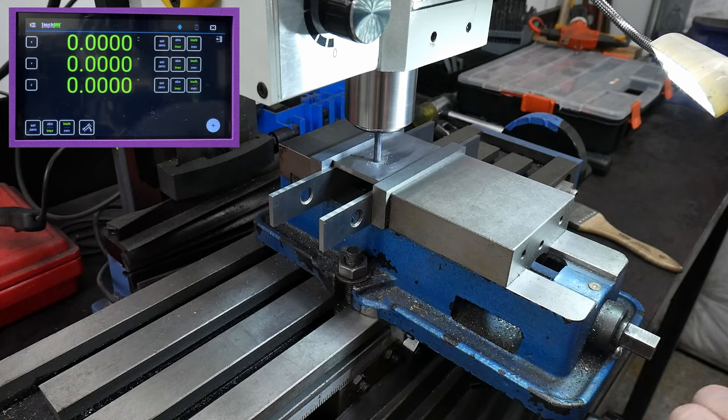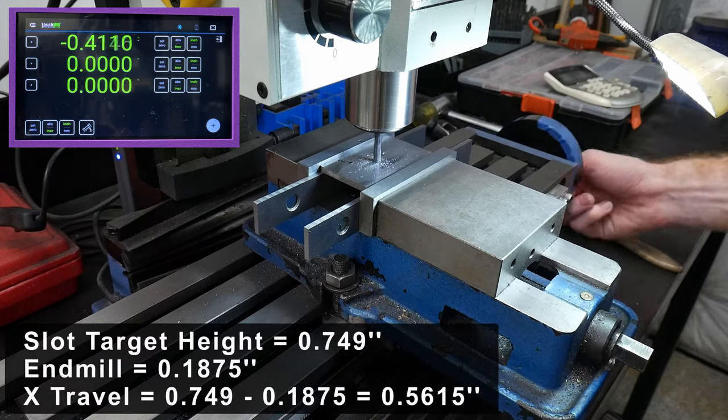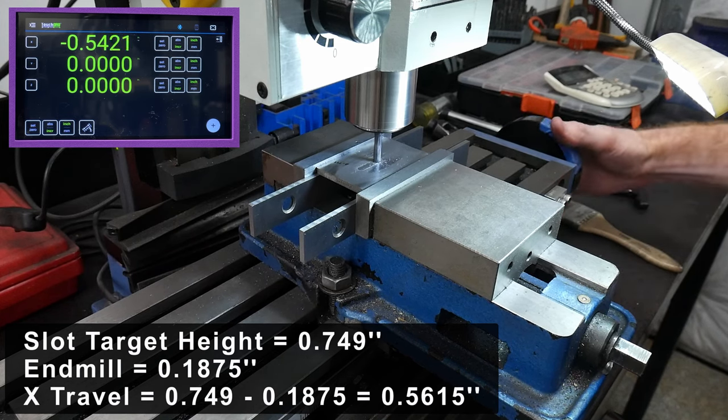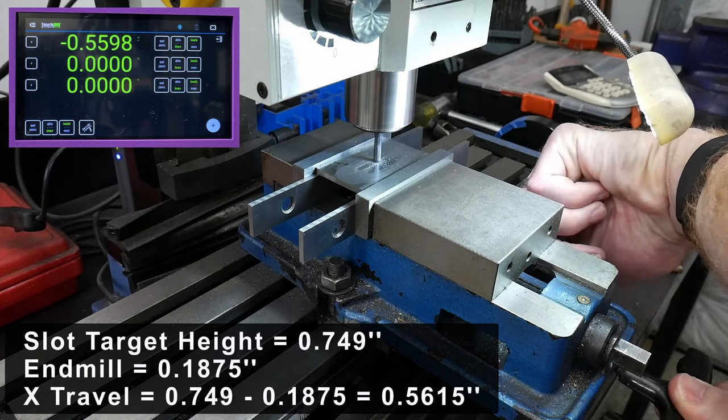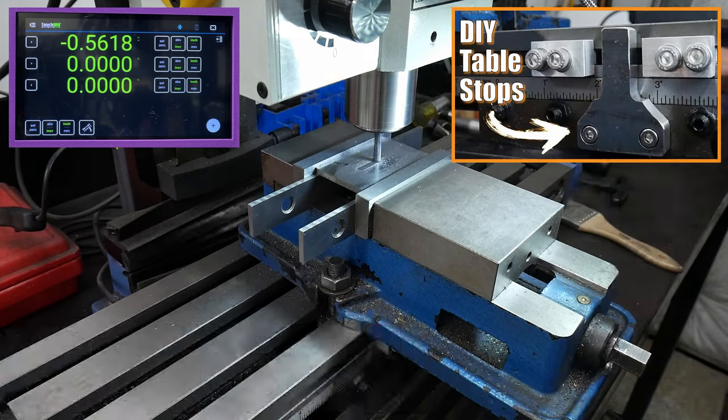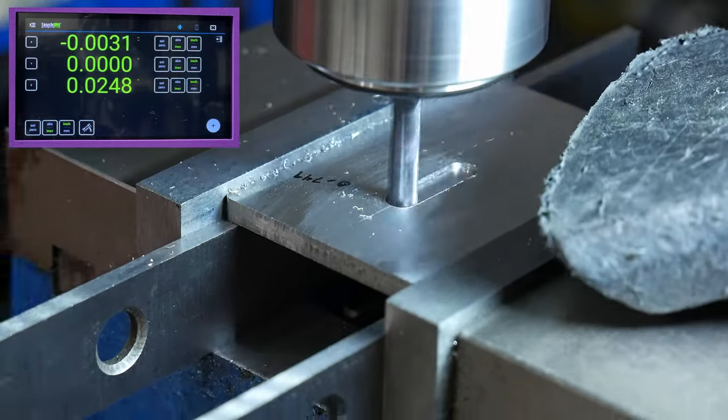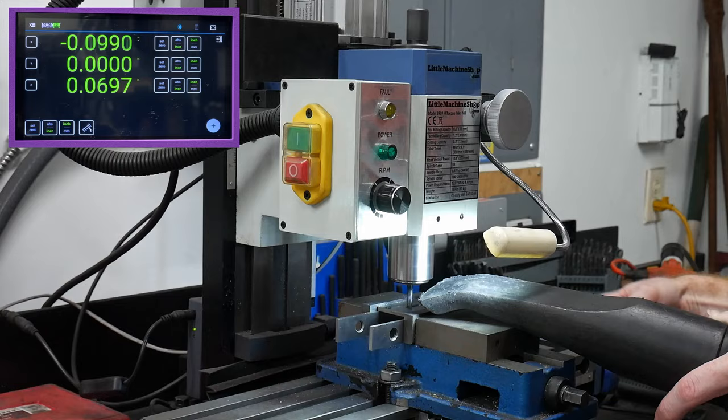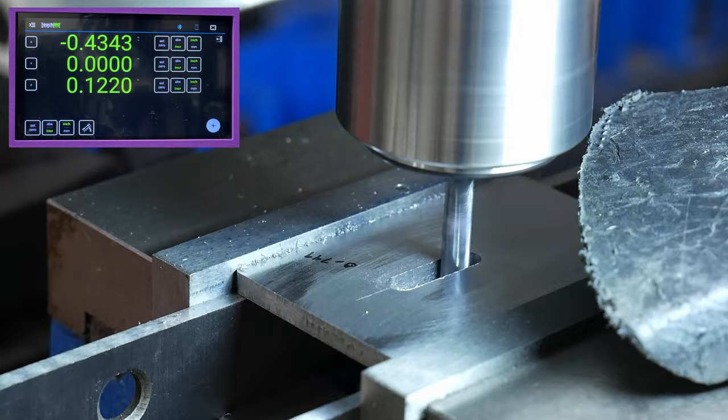Now it's time to mill the guard slot. I measured the height of my tang at the ricasso to around 749 thousandths. The end mill I'm using is a 3/16ths carbide end mill, so the total X travel on my mill will be about 561 thousandths. I've taken a page of Carl Anderson's book and fashioned some table stops for my mill. This allows me to set the x-axis travel range and not worry about that measurement again while milling the slot. I mill down 2 to 4 thousandths at a time for each pass until making it all the way through the guard. This guard is around 174 thousandths thick and took me about 13 minutes to get through.